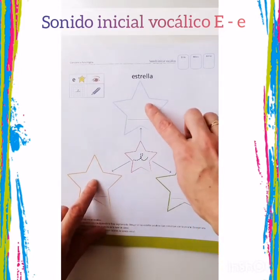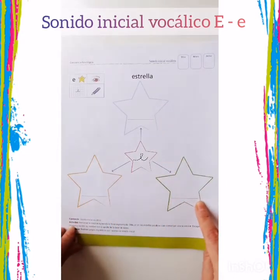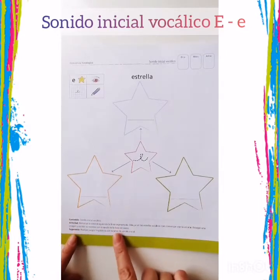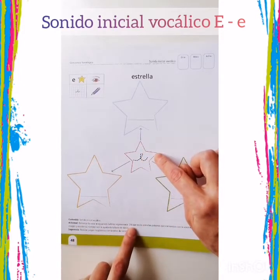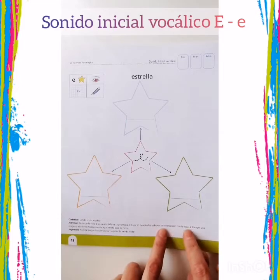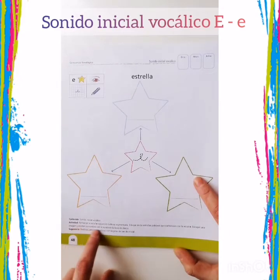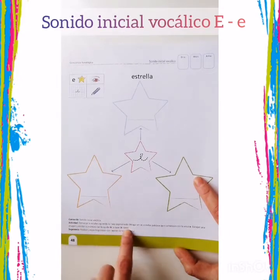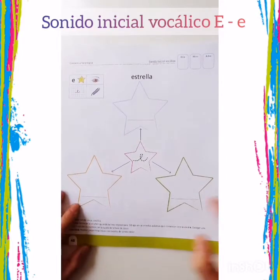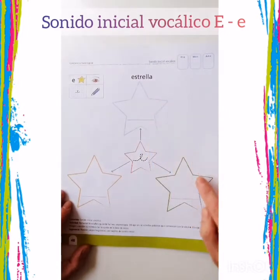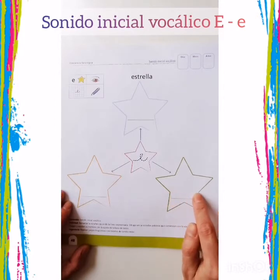Y en las otras estrellas más grandes hay una línea recta en la parte de abajo. Con la ayuda de un adulto leemos las indicaciones. Dice: remarcar la vocal E siguiendo la línea segmentada. Dibujar en las estrellas palabras que comiencen con la vocal E. Escoger una imagen y escribir su nombre con la ayuda de la base de datos. Para esto podemos recordar los elementos que vimos en la bandeja especial. Eligen la imagen, la dibujan y con la ayuda del adulto escriben el nombre en la parte de abajo.